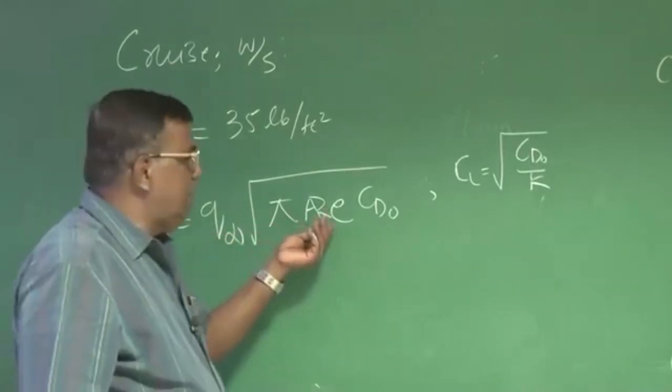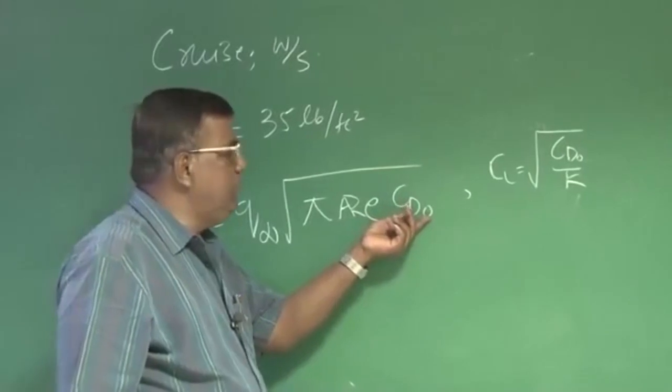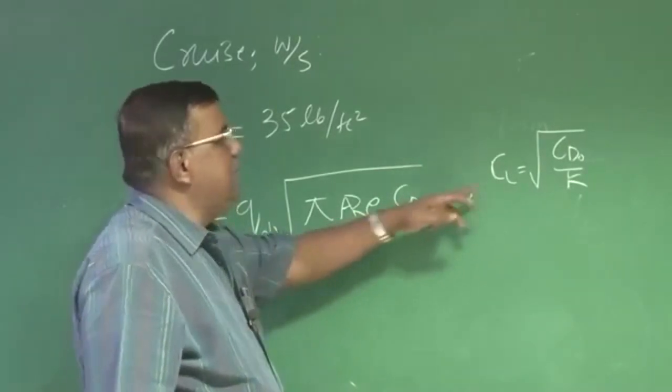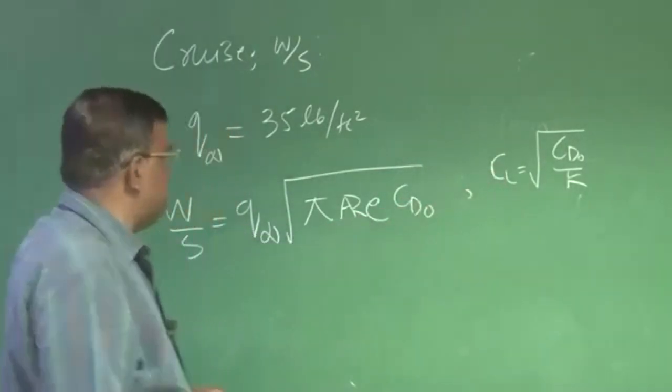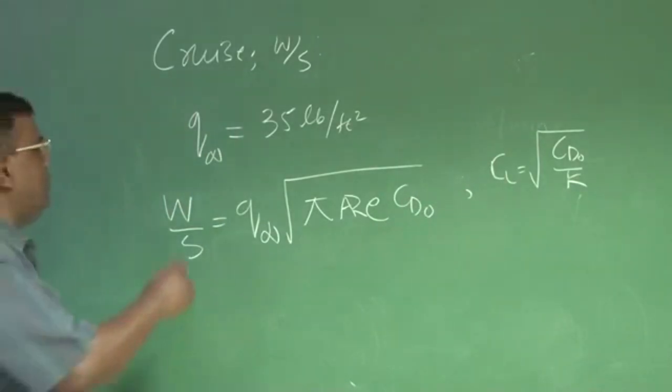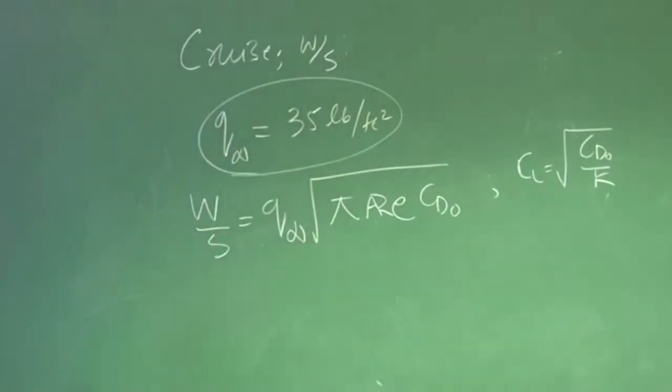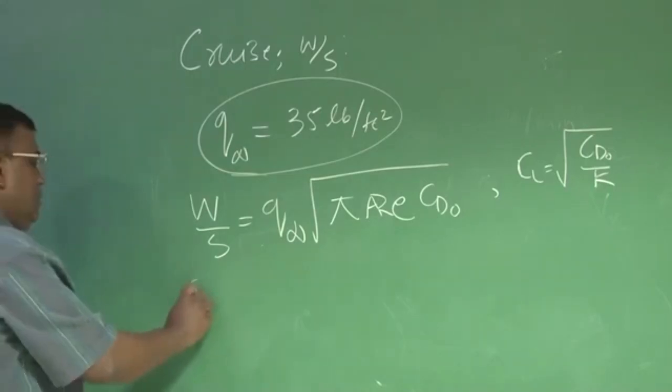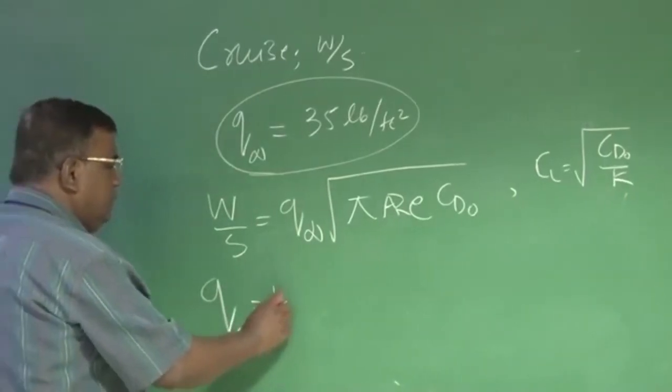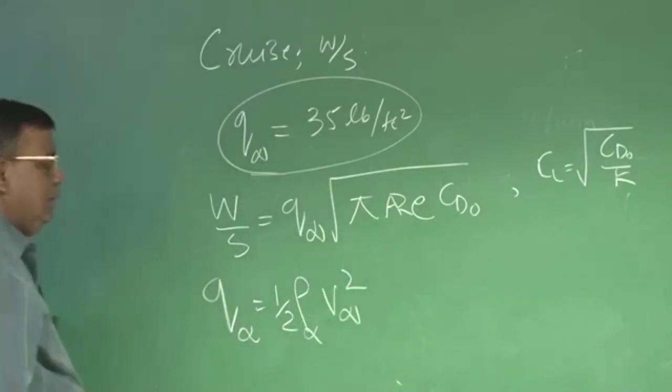Now, I ask a question to myself. When I am writing Q infinity as 35 pound per feet square with the dynamic pressure, so Q infinity is half rho V infinity square. So I know through dynamic pressure what is the combination of rho and V infinity.